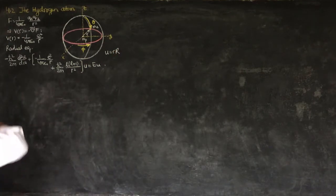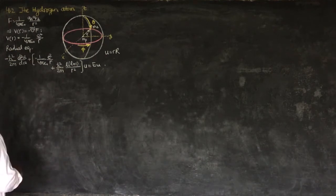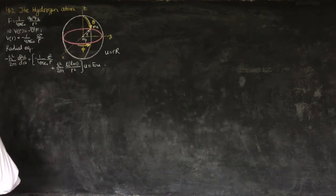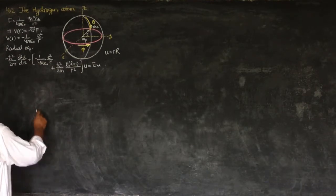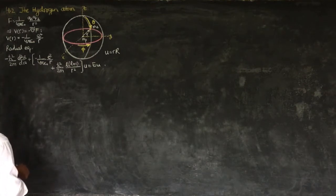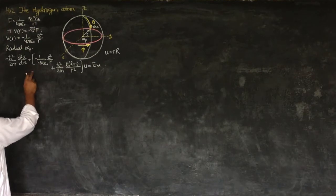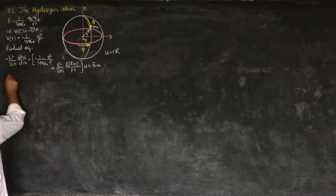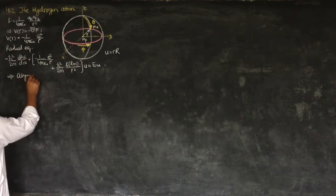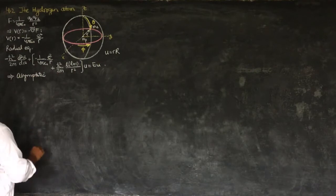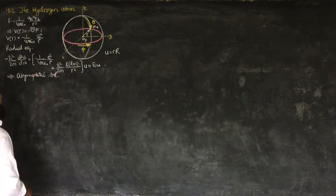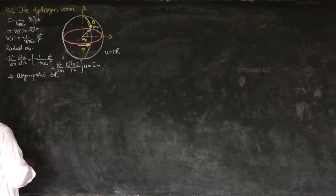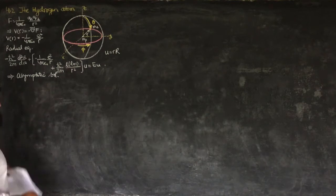We will now solve this differential equation. It is difficult but we will solve it. The first thing we do is convert this equation into a cleaner form so that we can apply limits. The solution will be asymptotic, as it is very hard to solve this equation directly. For the asymptotic solution we need to convert our equation into a cleaner form where we can put the limits very easily.